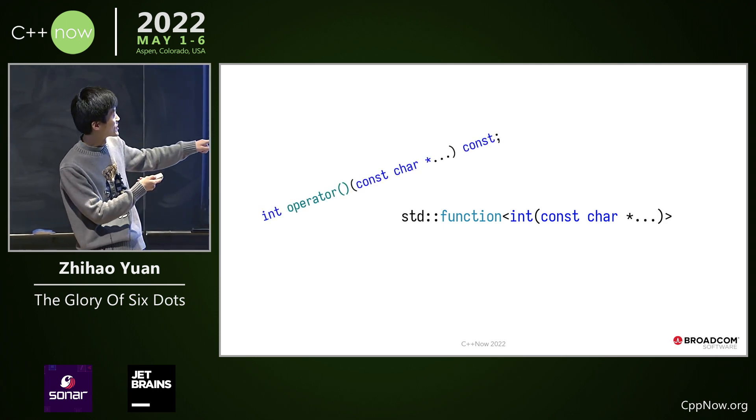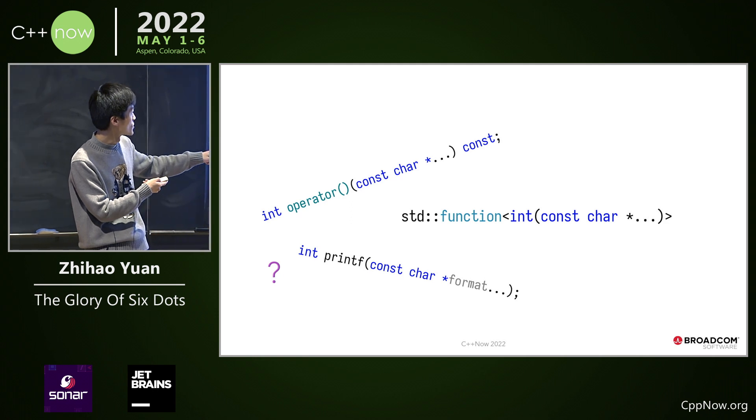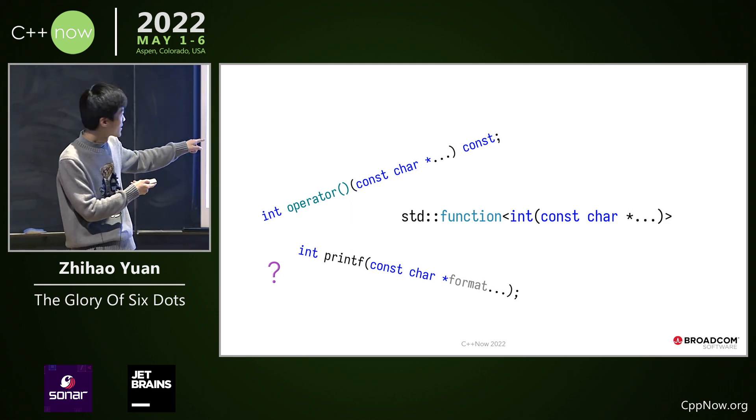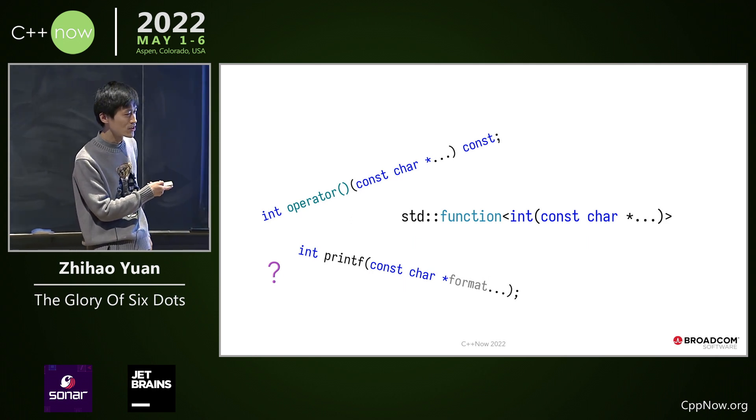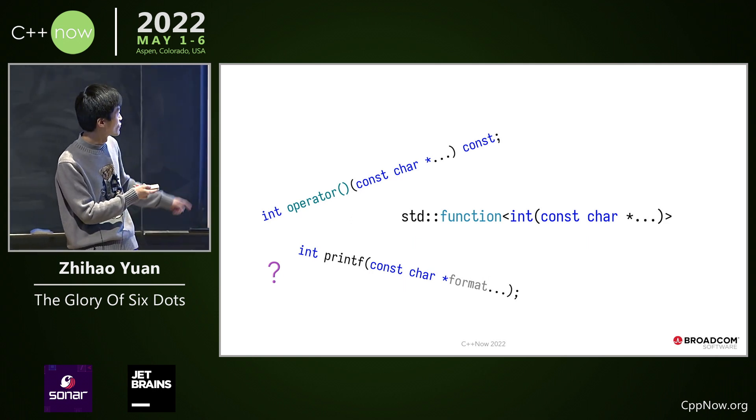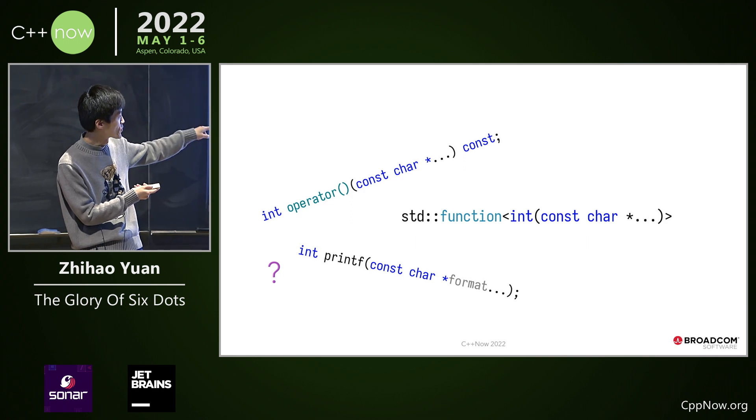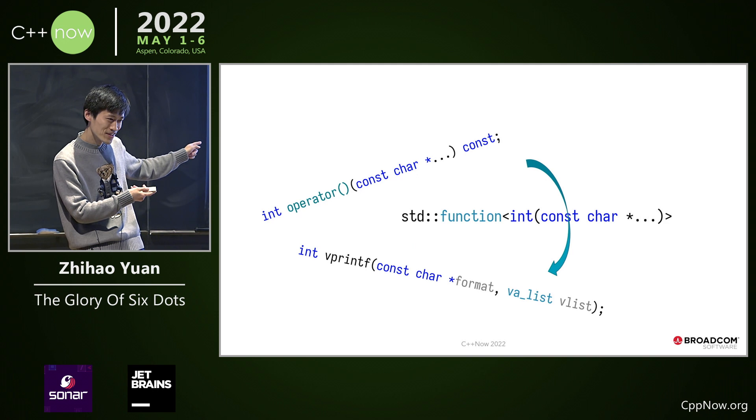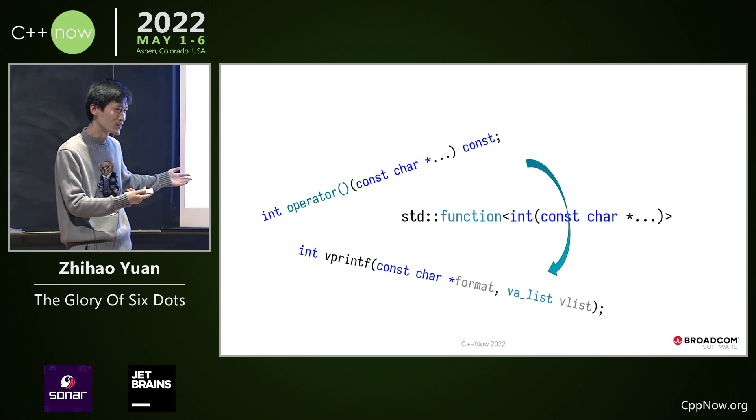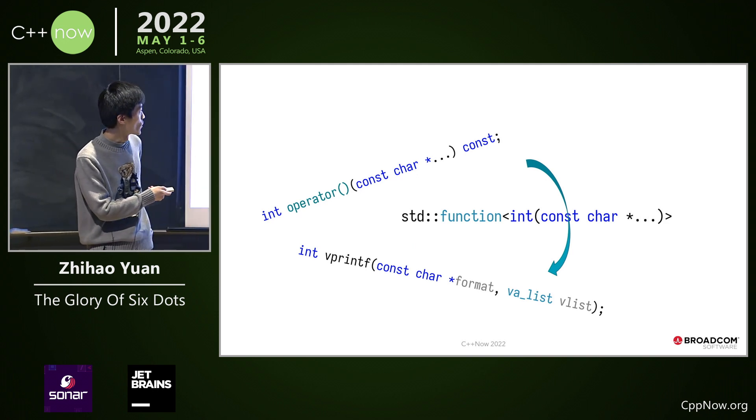If you're familiar with it, it's very similar to printf. This thing comes with the operator parentheses with the same signature. You might be wondering how do I forward this call operator to printf? The answer is I didn't. I forward to vprintf doing all those things for you.